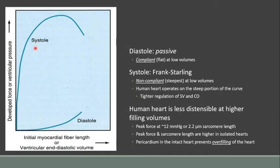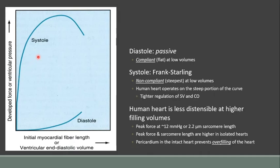However, systole — we know this is the active period where our cardiac muscles are going to become activated and contract. Looking at this curve, this is going to show a less compliant curve, and we're going to see steep increases in pressure at low volumes, because those cardiac muscle fibers are going to contribute to ventricular pressure. The human heart is going to operate on the steep portion of the curve. As those ventricles fill up with blood, as that preload increases, so does the peak force developed by cardiac myocytes and therefore pressures inside. In an intact human heart, physiologically we're not going to see this descending portion of the curve, because the pericardium prevents overfilling and allows for high peak pressures in order to eject out blood.